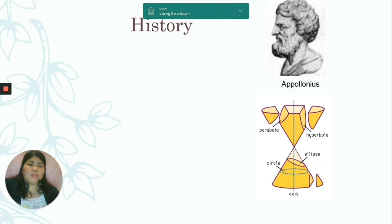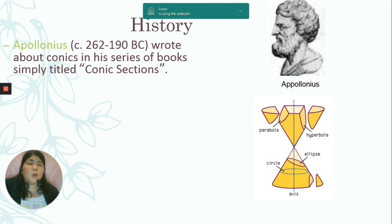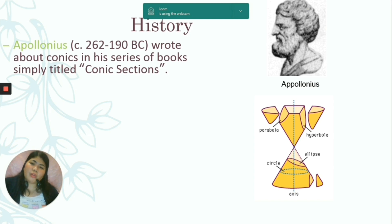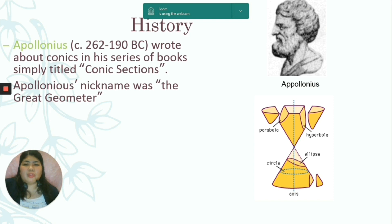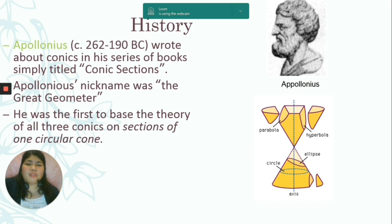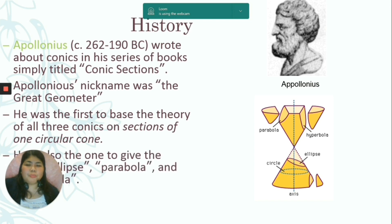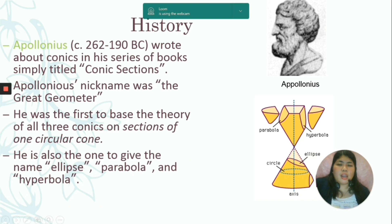There is another important person involved here, which is Apollonius. He wrote about conics in a series of books simply titled Conic Sections — so he is the one responsible for that title, which STEM students are all familiar with. Apollonius' nickname was the Great Geometer. He was the first to base the theory of all three conics on sections of one circular cone, and he was also the one to give the names Ellipse, Parabola, and Hyperbola.